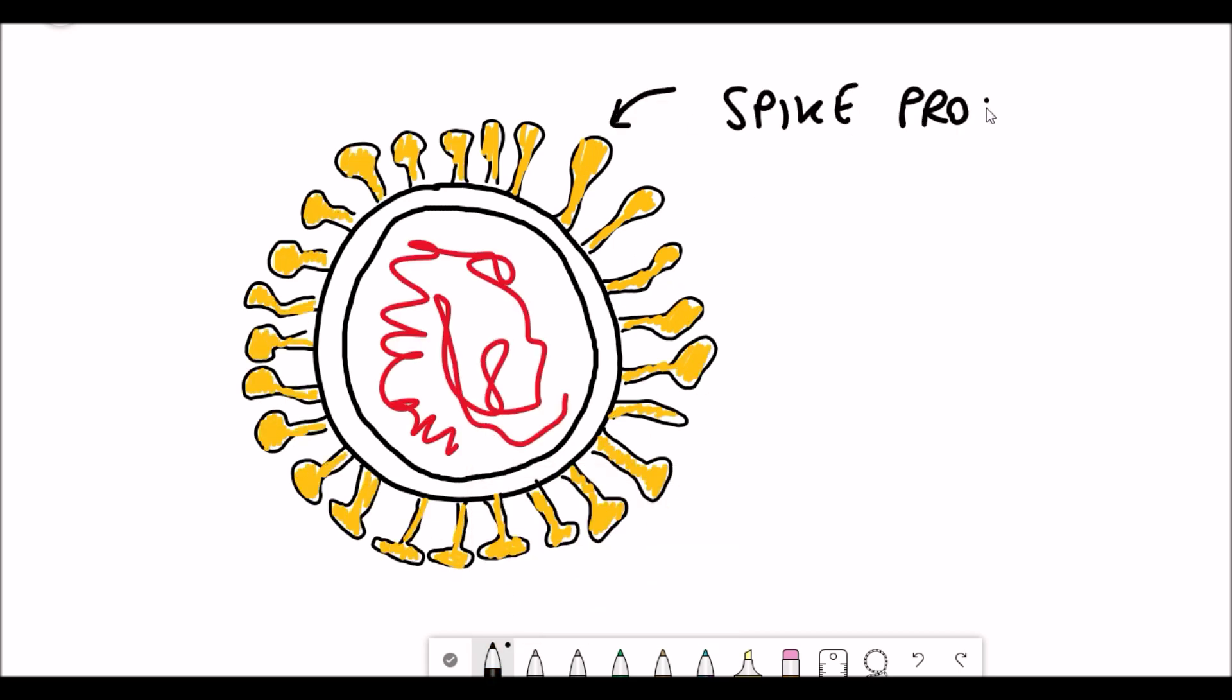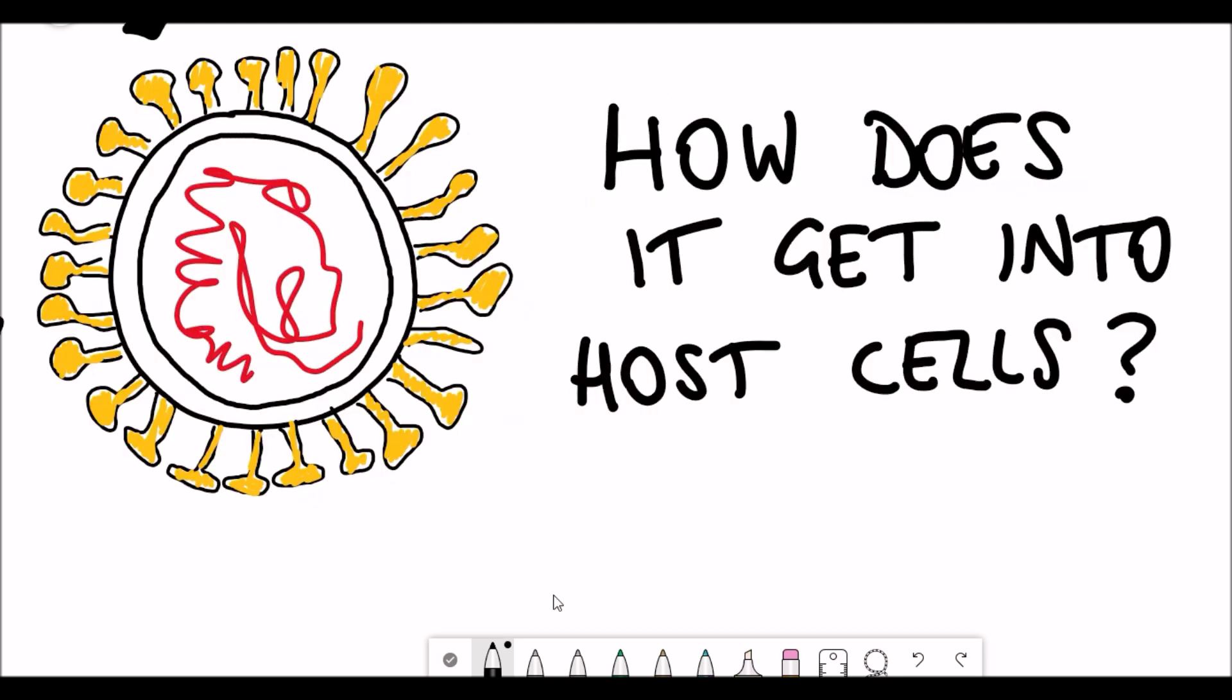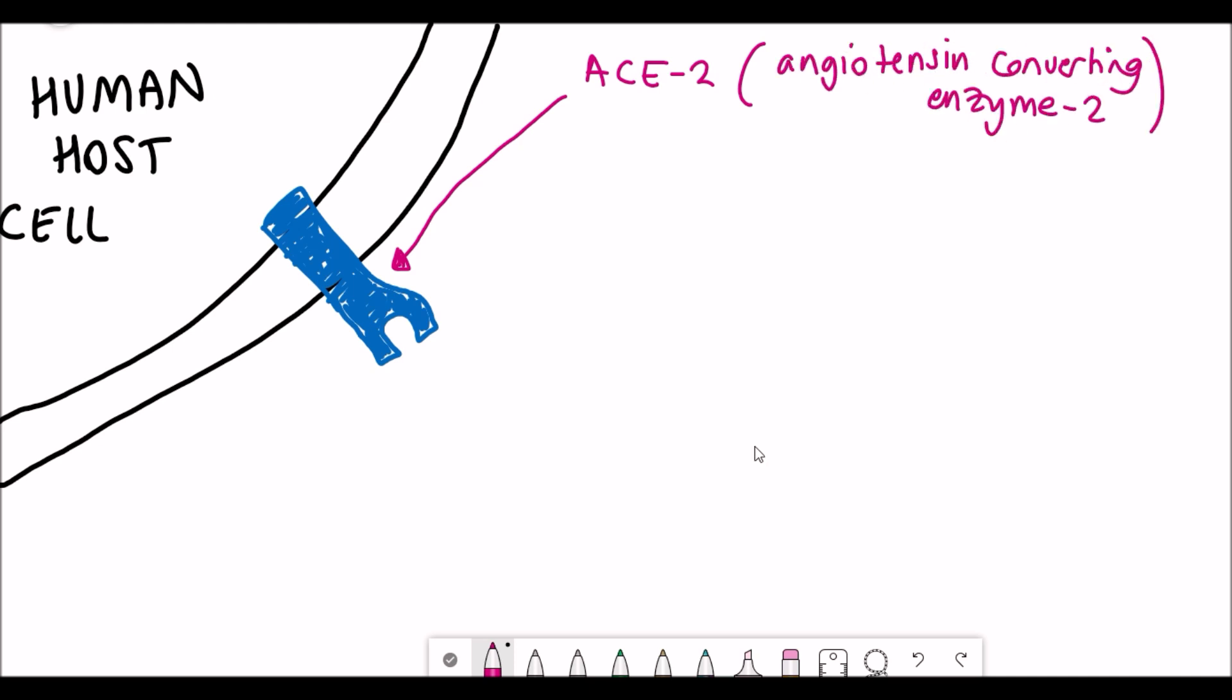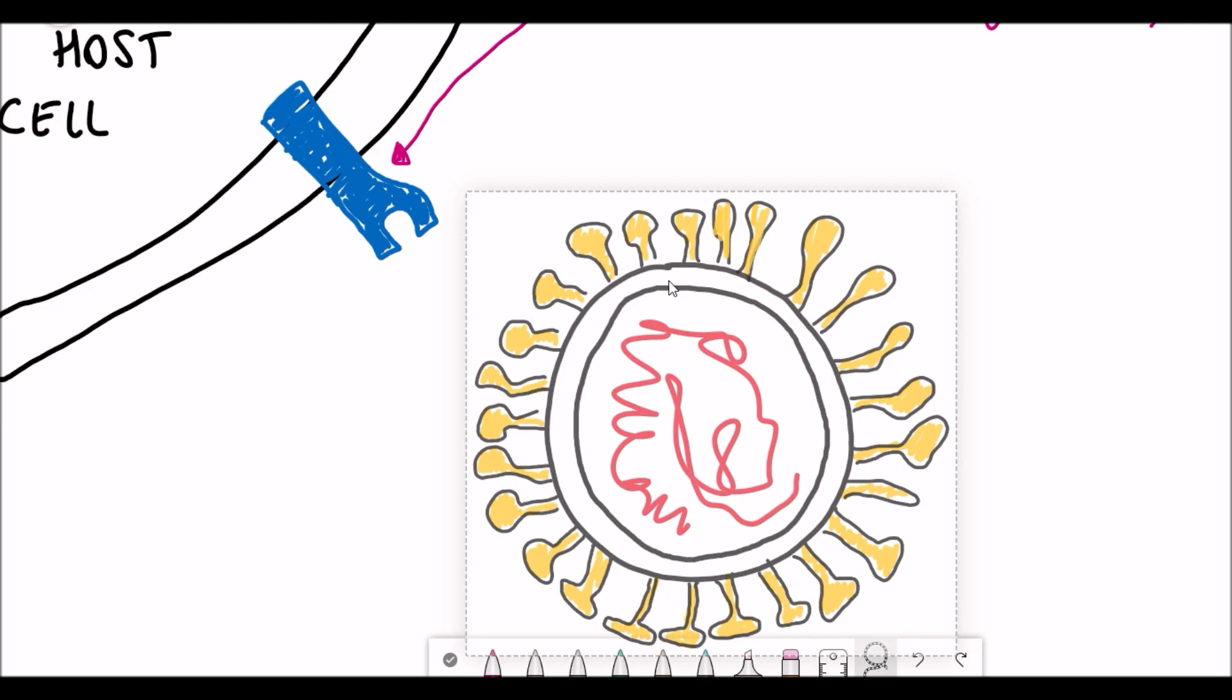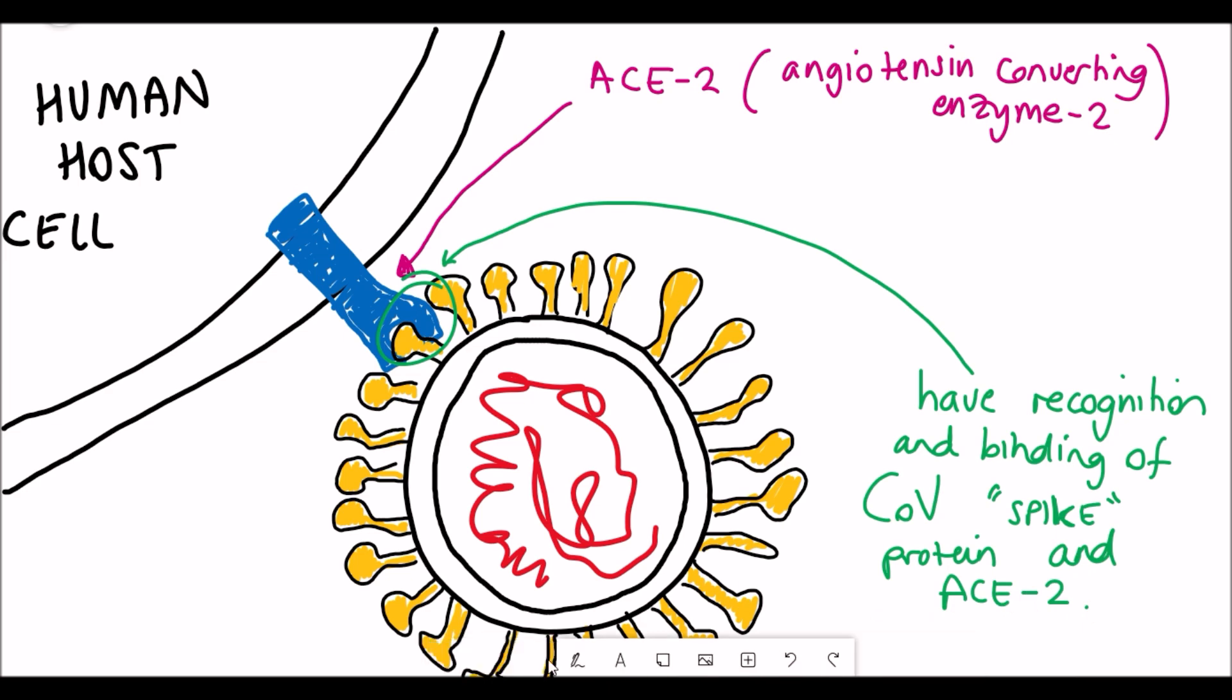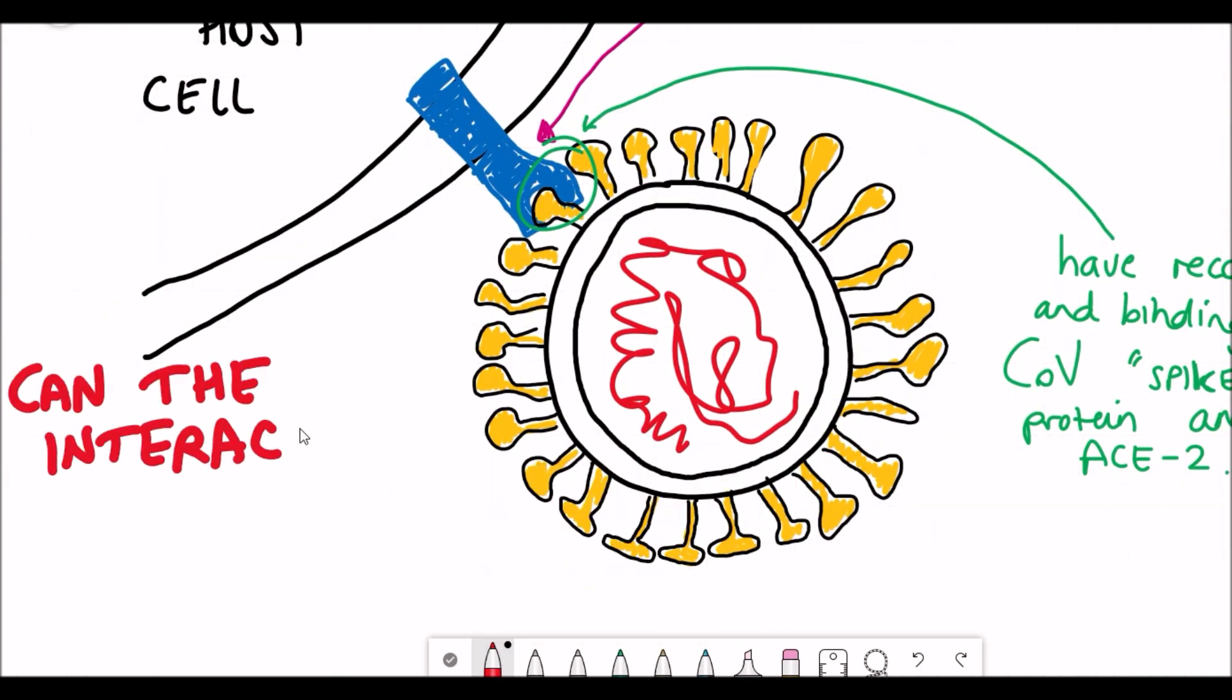The outside of the virus is decorated with these spike proteins, and these spike proteins are important for it to get inside the host cells. So what happens is the spike proteins contain a receptor binding domain, and this can interact with a human host cell protein referred to as ACE2, standing for angiotensin converting enzyme 2. So the spike protein recognizes this and enables integration of the virus inside the cell. Once inside the cell, the virus can replicate and cause further transmission.